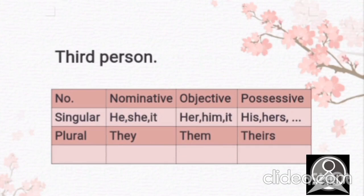Let's talk about the third person now. In singular, the third person in nominative case is he, she, it. Objective one: her, him, it. And the possessive one: his, hers, or we can say it's. When we talk about the plural one, this is they, them, theirs.